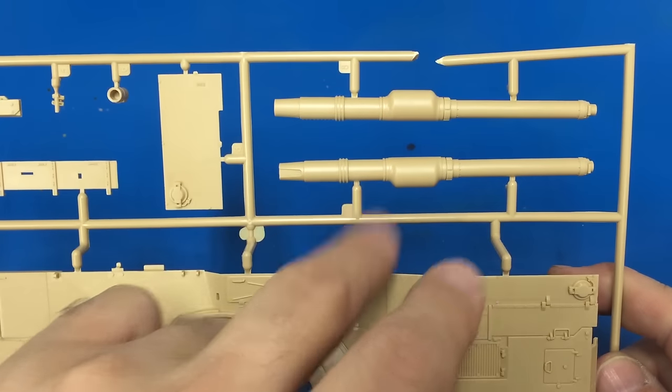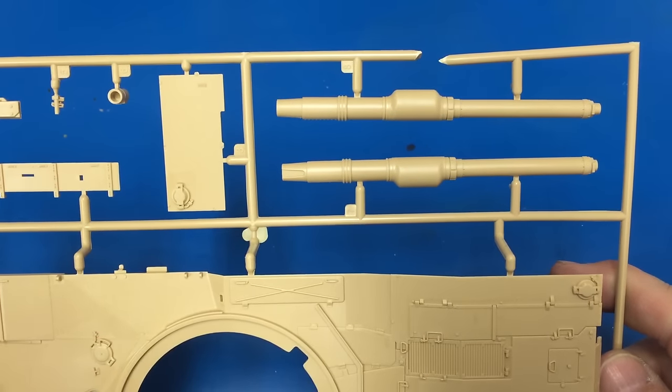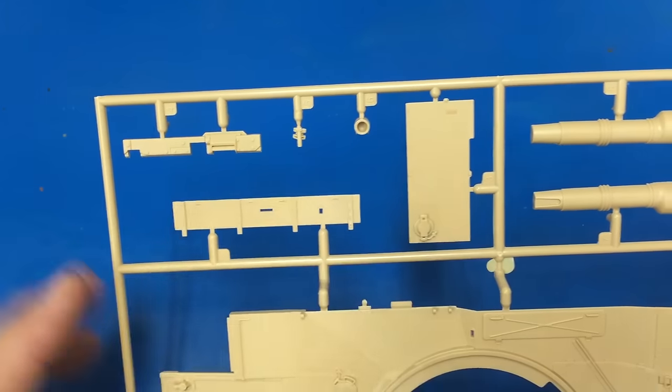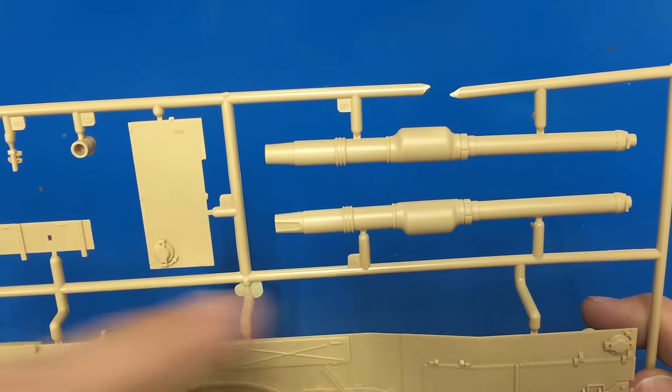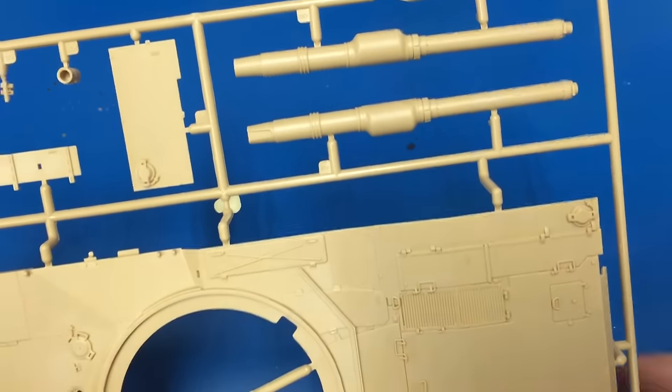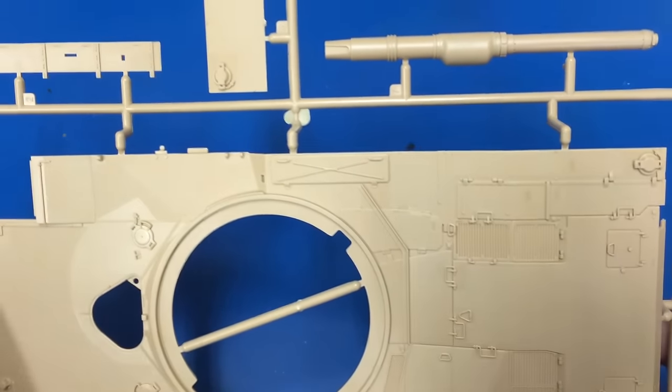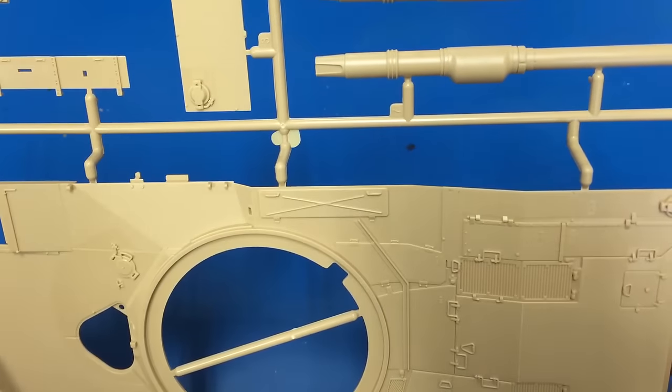The turret, or excuse me, the barrel is molded in two pieces with a single round piece up front for the end of it. So this is going to require quite a bit of sanding to get that seam out of the middle there. But you might have to try to go get a resin aftermarket barrel if that bothers you too much on it.